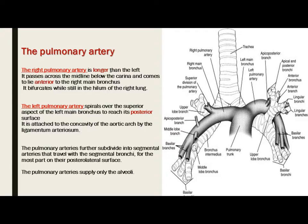The right main bronchus is shorter than the left, while the right pulmonary artery is longer than the left. This is because the left pulmonary artery spirals over the left main bronchus, so it has a shorter course and is slightly higher in comparison to the right side. That is why the right bronchus is called epiarterial and the left is called hypoarterial.